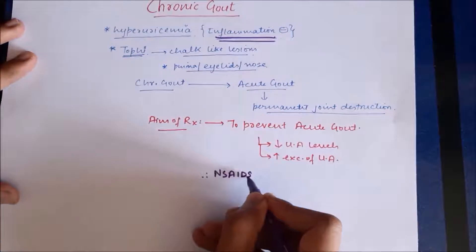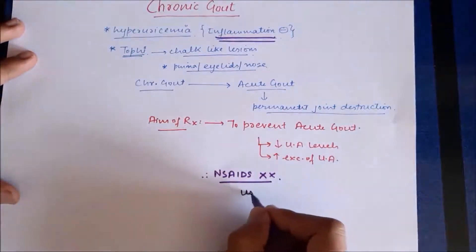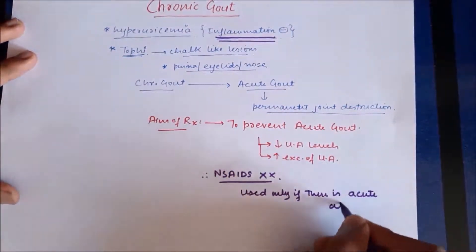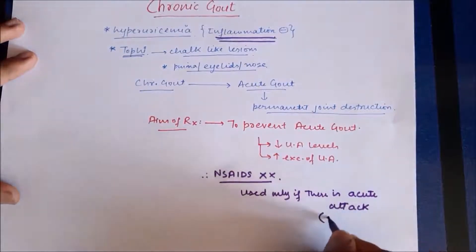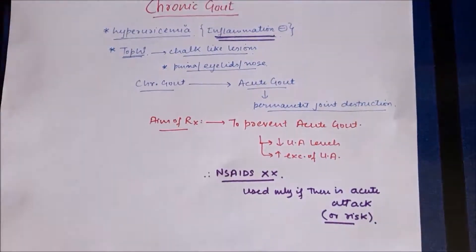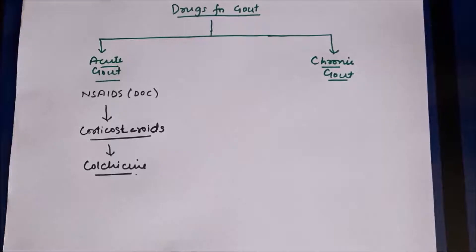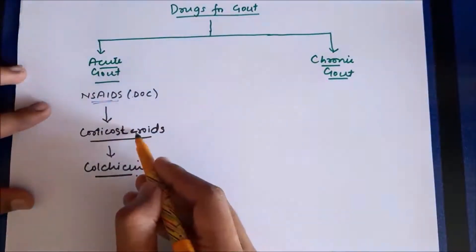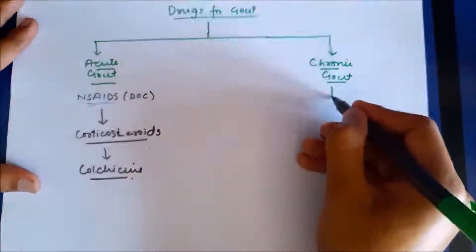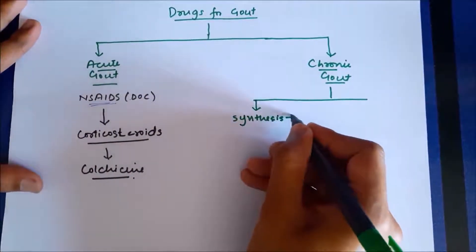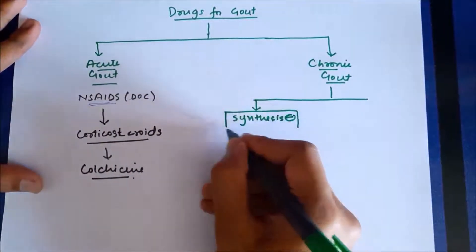Since chronic gout is not mainly associated with inflammation, NSAIDs are not used in this condition. However, NSAIDs can be used if there is an acute attack or if there is risk of an acute attack of gout — for example, by the use of the drug allopurinol. For acute gout, NSAIDs, corticosteroids, and colchicine are used. For chronic gout, two classes of drugs are used.